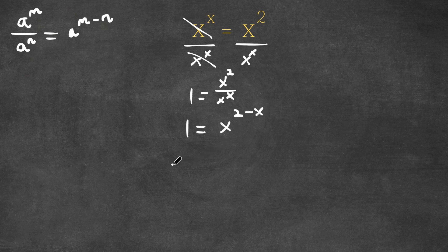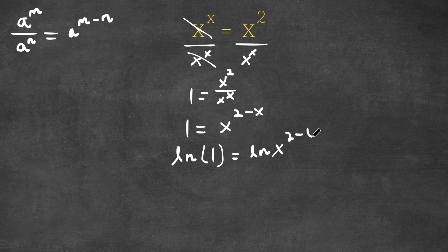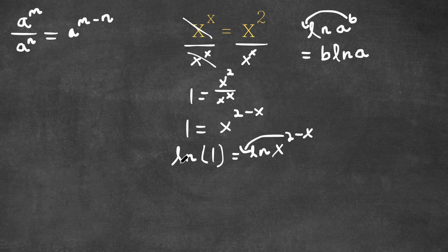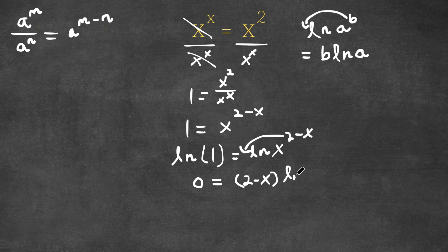Now I'm going to ln both sides. So now I have ln of 1 is equal to ln of x to the power of 2 minus x. An important property of logarithms is that for ln of a to the power of b, we can move the exponent b to the front of the logarithm, giving b times ln a. So I'm going to move the exponent 2 minus x to the front. And since ln of 1 is 0, we have 0 is equal to 2 minus x times ln x.